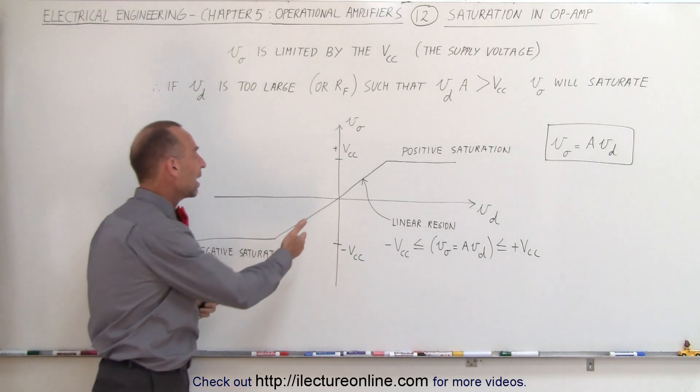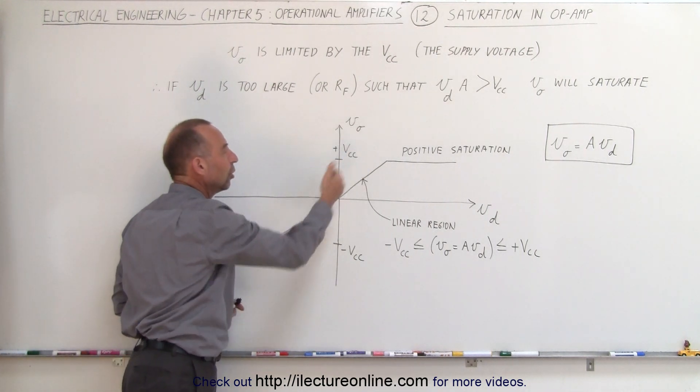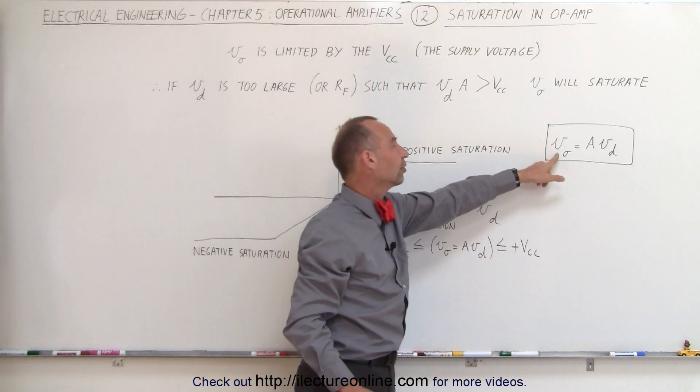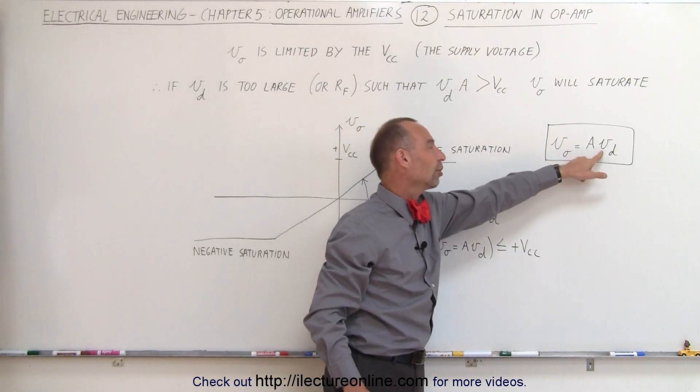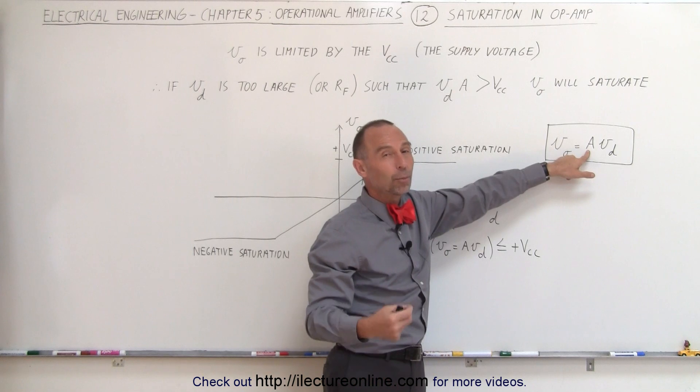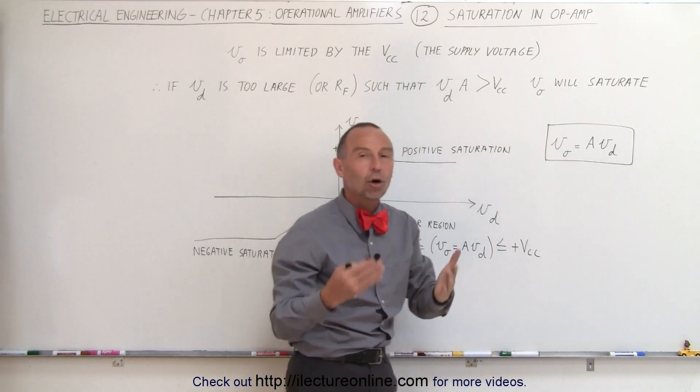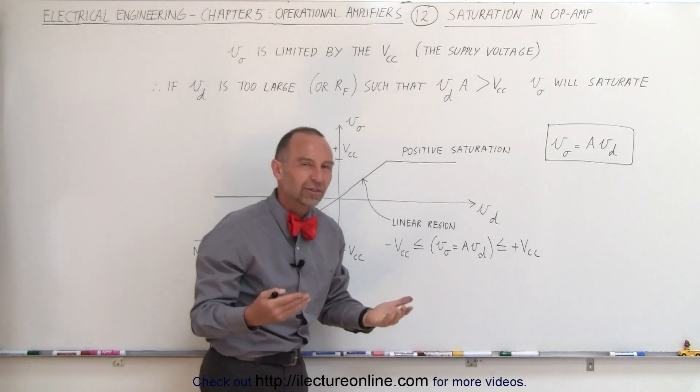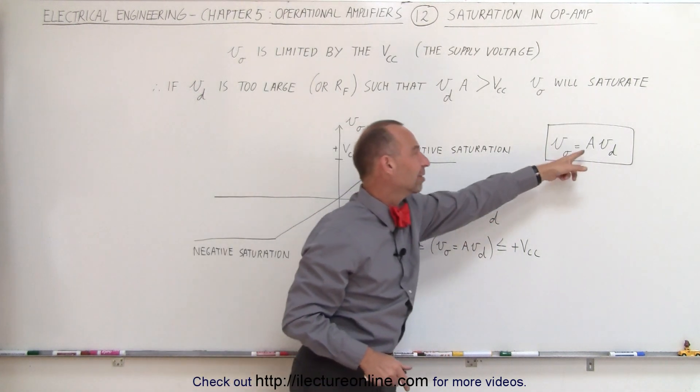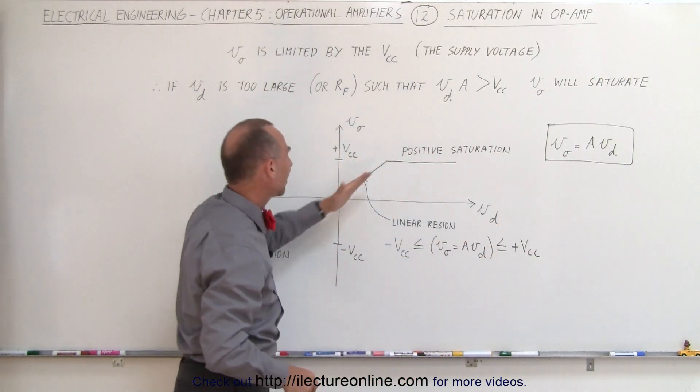In between those two values we have what we call a linear region where the output voltage is simply a linear function of the voltage difference, where A here, the open loop gain, is the slope of that function, like y equals mx plus b. So A simply represents the slope of that linear region.